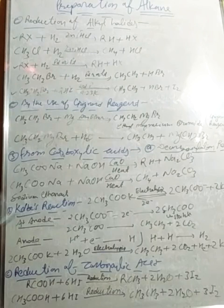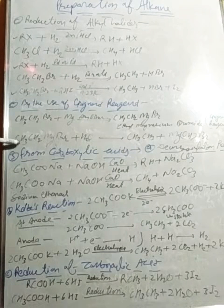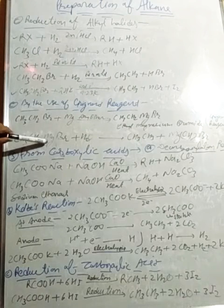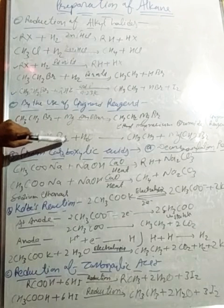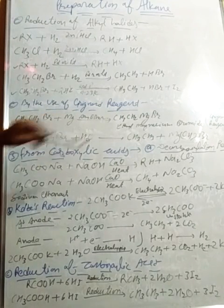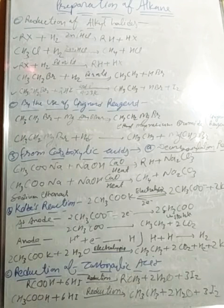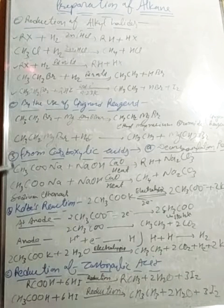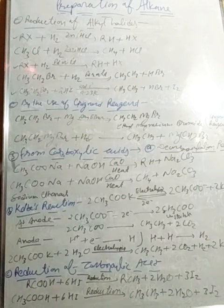CH₃CH₂MgBr plus H₂O, on hydrolysis, forms ethane plus magnesium hydroxide bromide. The next method shows how alkane can be obtained from carboxylic acids.